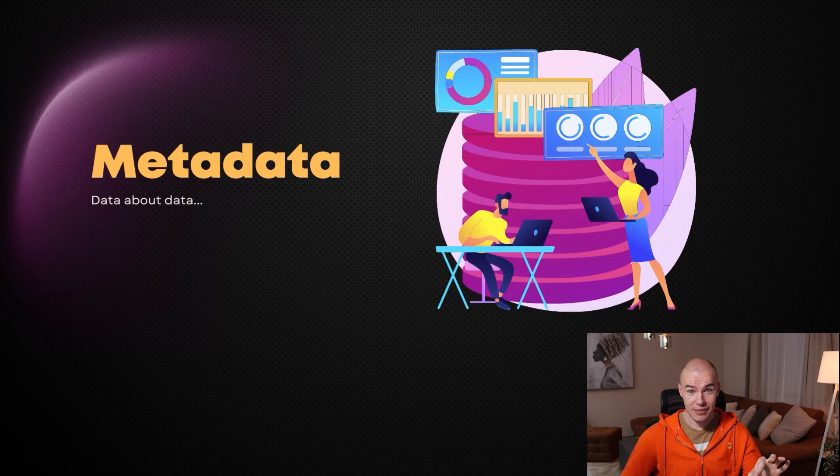Metadata is data about data — that's the official definition. Let me explain it in a more plain way. Metadata in any programming language is supposed to provide us with some additional information about some part of our project. In this case, metadata inside of the Cargo.toml file is supposed to give us additional information about the project itself. You'll see all about it when I start discussing the package section in detail — when I talk about its fields, you'll be able to figure out what metadata actually provides for us.